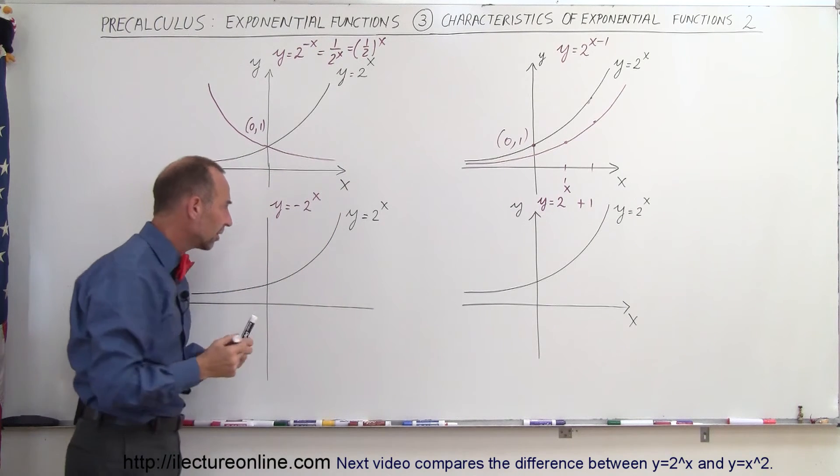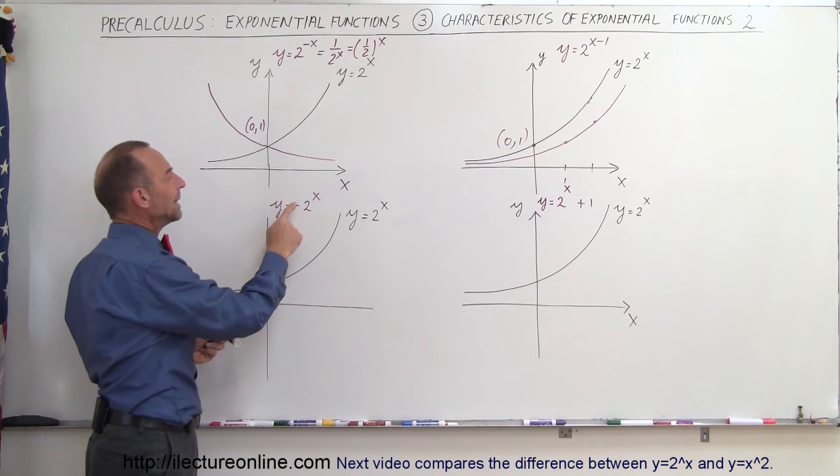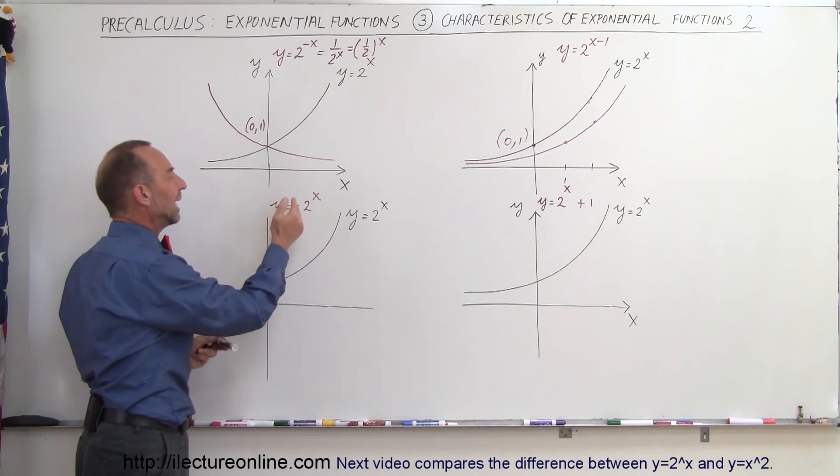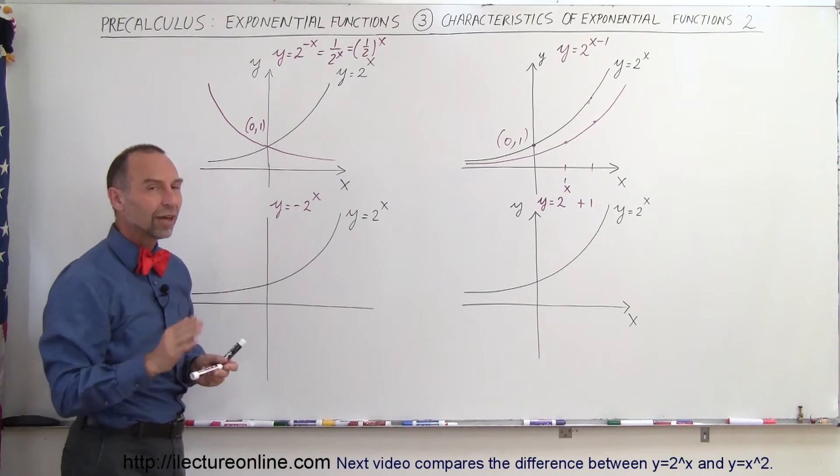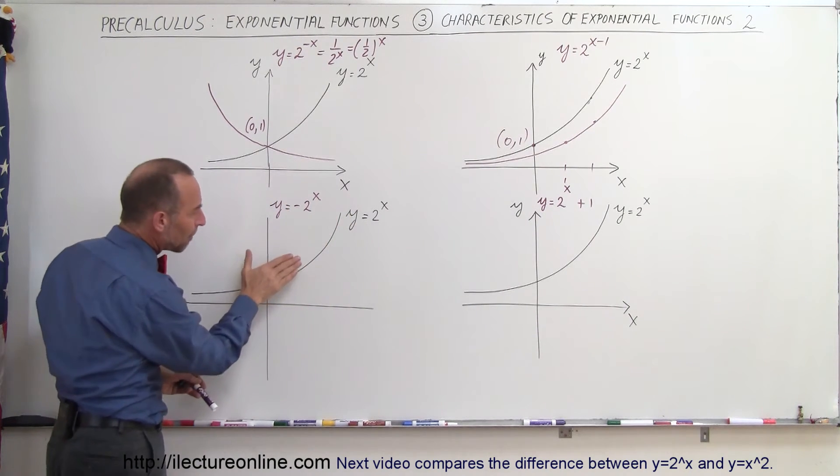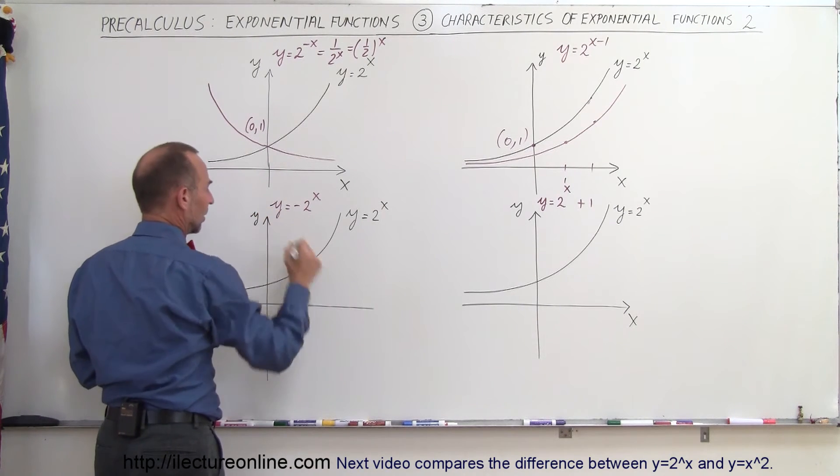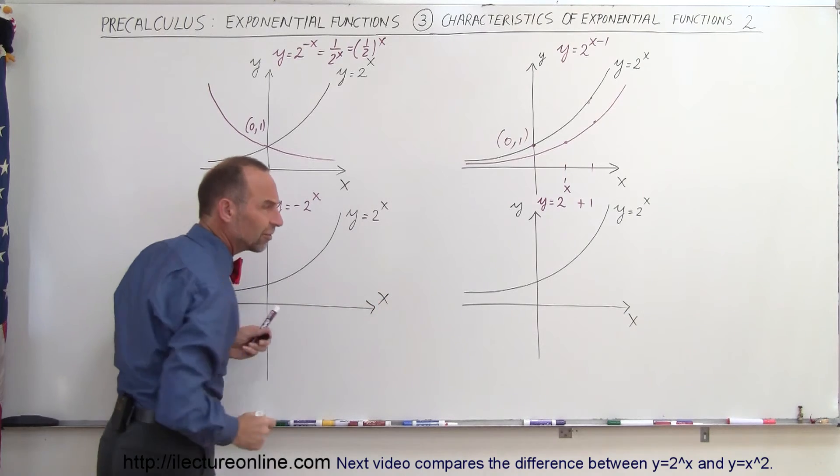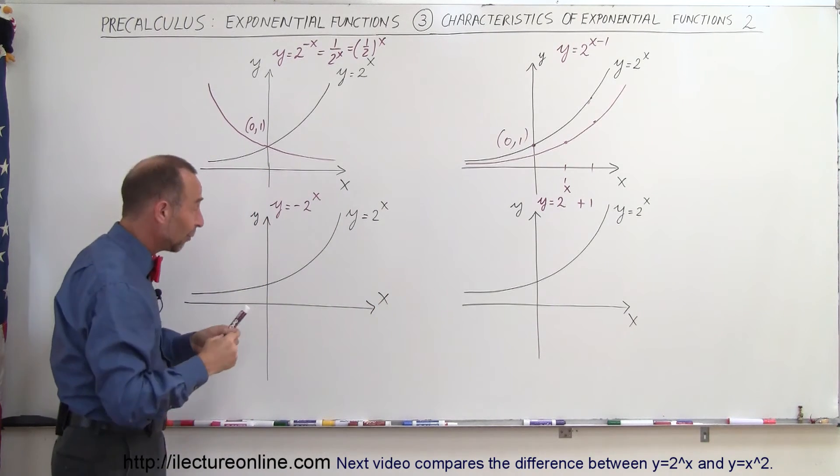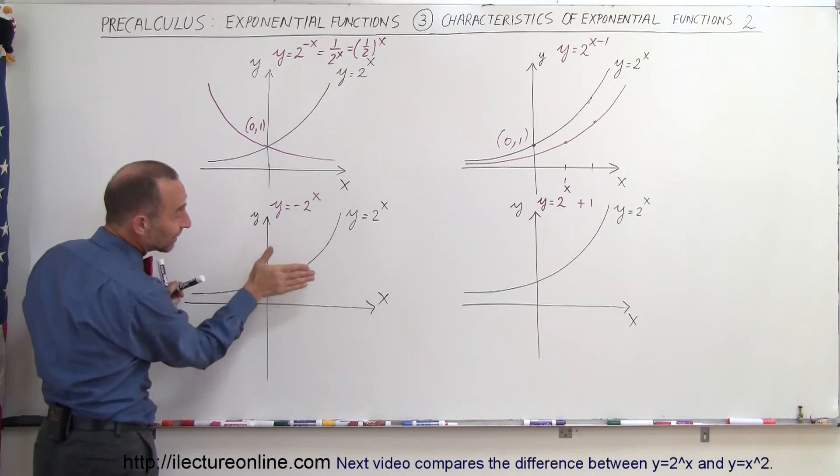Alright, let's take a look at our third example. What happens when we put a negative in front of the function, y equals negative 2 to the x, instead of y equals 2 to the x? That gives you a mirror image about the y-axis. So remember that this here is the y-axis. Did I say y-axis? I meant to say x-axis. It gives you a mirror image about the x-axis.